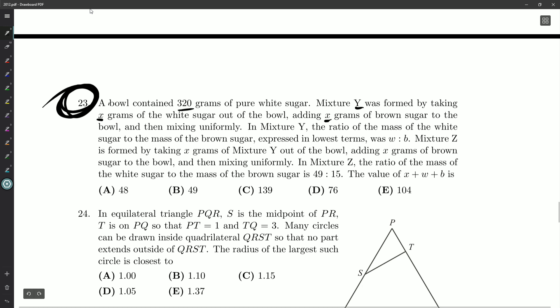In mixture Y, the ratio of the mass of the white sugar to the mass of the brown sugar in lowest terms is W to B, white to brown. Mixture Z is formed by taking X grams of mixture Y out of the bowl, so that'll have some part of it white, some part of it brown, and adding X grams of brown sugar to the bowl, and then mixing uniformly again. In mixture Z, the ratio of the mass of white sugar to brown sugar is 49 to 15.